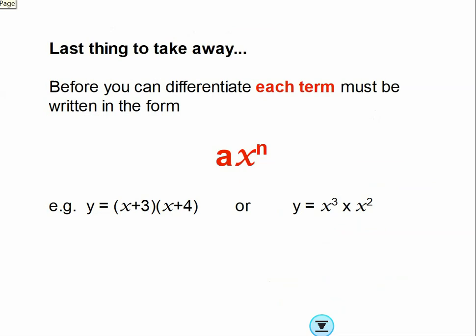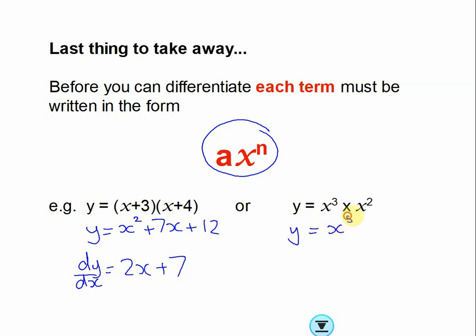Last thing to take away: every single term before you can differentiate must be in this form. So for example, if you had this, you can't differentiate this until you expand it. So that would still be y, and then you could differentiate. Times by the power, reduce the power by 1. Times by the power, reduce the power by 1. Here you should be able to spot this as an indices problem. So y is actually the same as x to the power of 5, because I'm timesing indices with the same base value, I can add the powers.